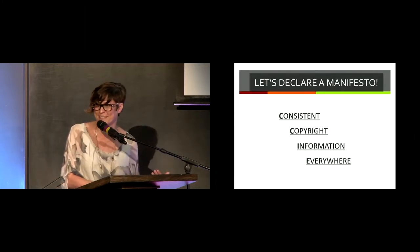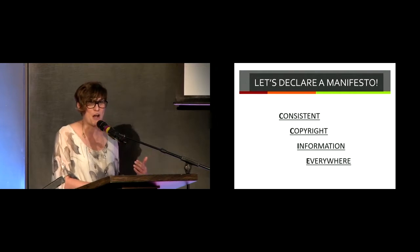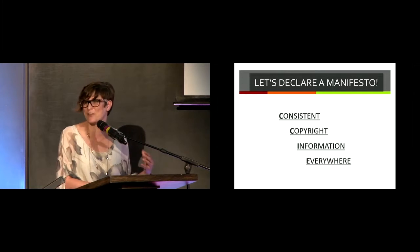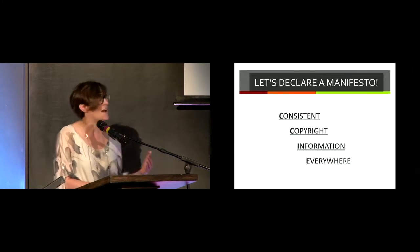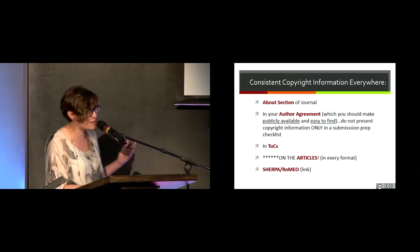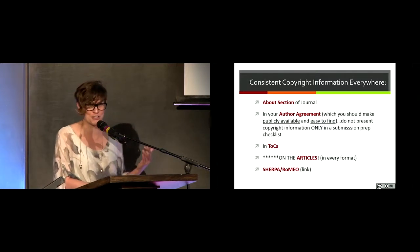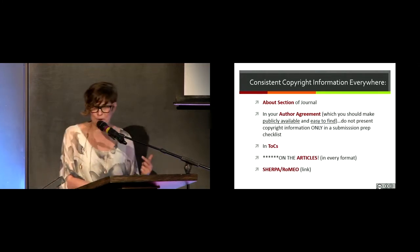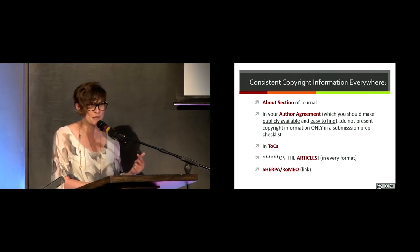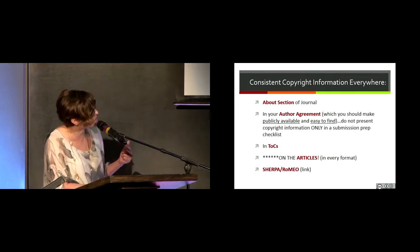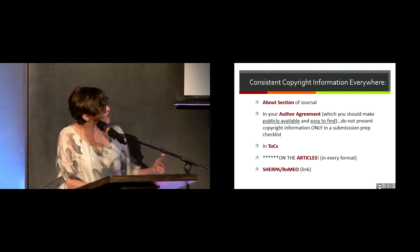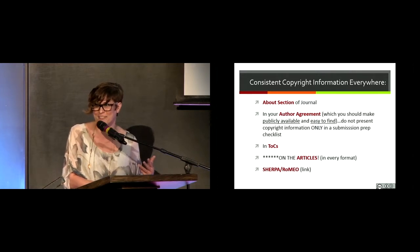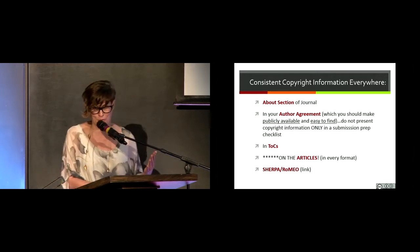So we just have to decide to fix this. We need to together commit to consistent copyright information everywhere. To make some specific recommendations for any library publishers or journals here: in the About section of your journal, in your author agreement — which should be a separate document easily downloaded from your website, not buried in a submission prep checklist — on your table of contents, and very importantly, on the articles themselves. The articles are the things that are moving around and flowing all over the place, and have a Sherpa Romeo record.